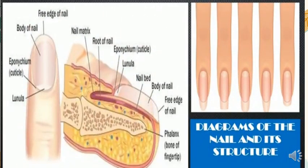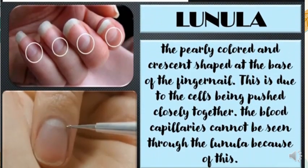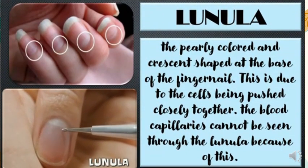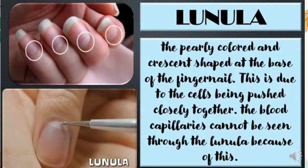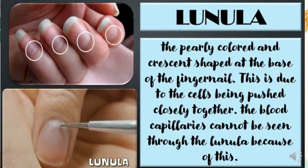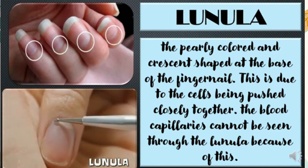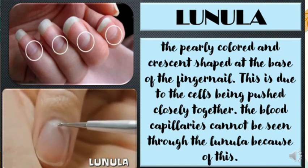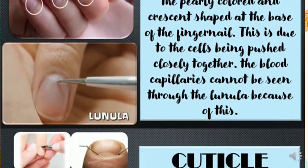Here is the structure of the nail. Lunula — the pearly colored and crescent shape at the base of the fingernail. This is due to the cells being pushed closely together. The blood capillaries cannot be seen through the lunula because of this.